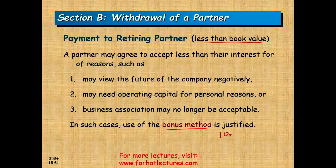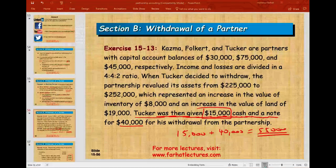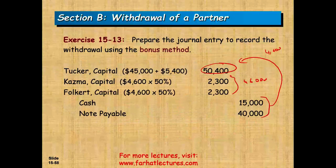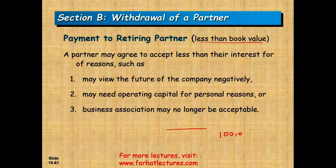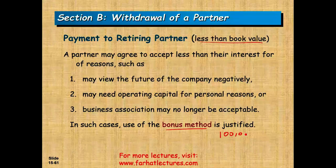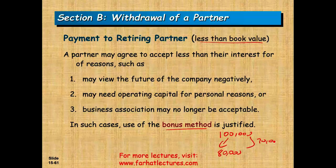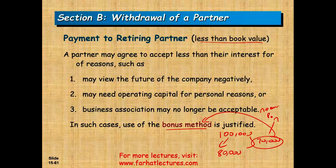Under those circumstances, the bonus method is justified. Simply put, if your balance is $100,000 and we're only going to give you $80,000, you are losing $20,000. That $20,000 is a bonus to the remaining partners, distributed according to their agreement.